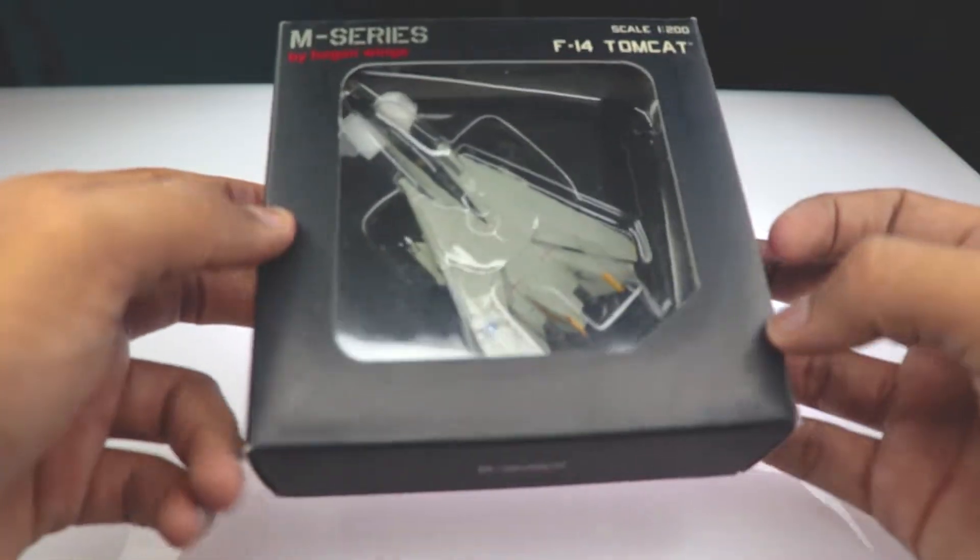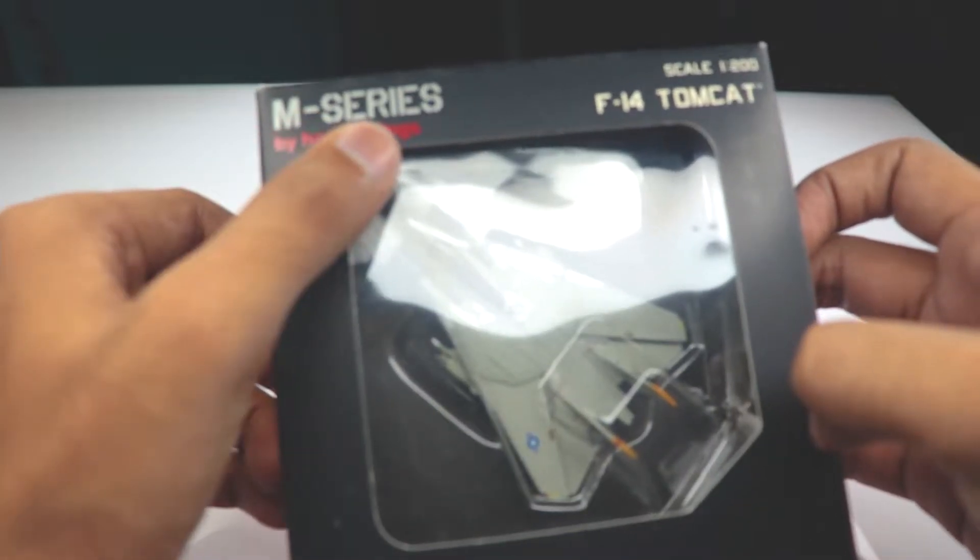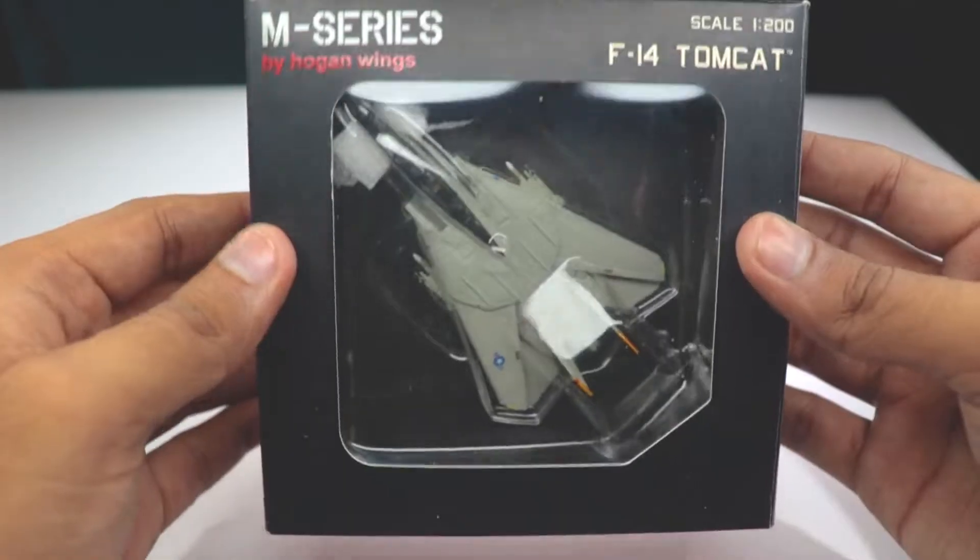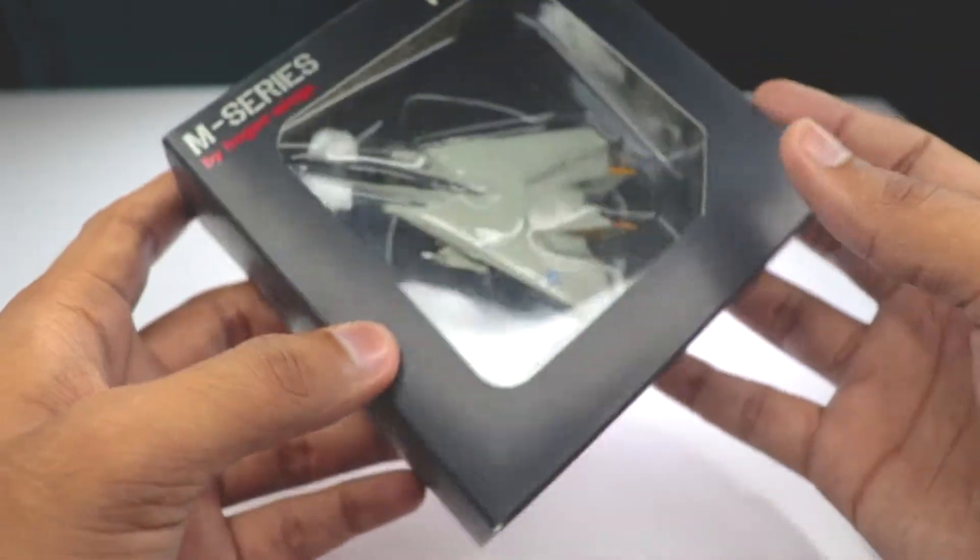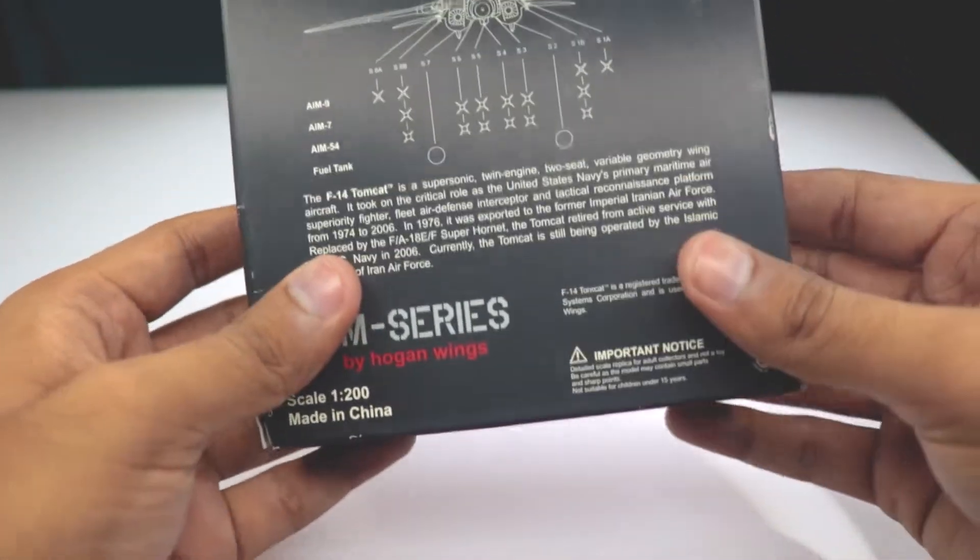What's going on guys, Harsh here back in the radio and today I am unboxing the Hogan M series 1-200 scale F-14 Tomcat and this is a pretty nice model to have. It has expandable wings and all sort of stuff.